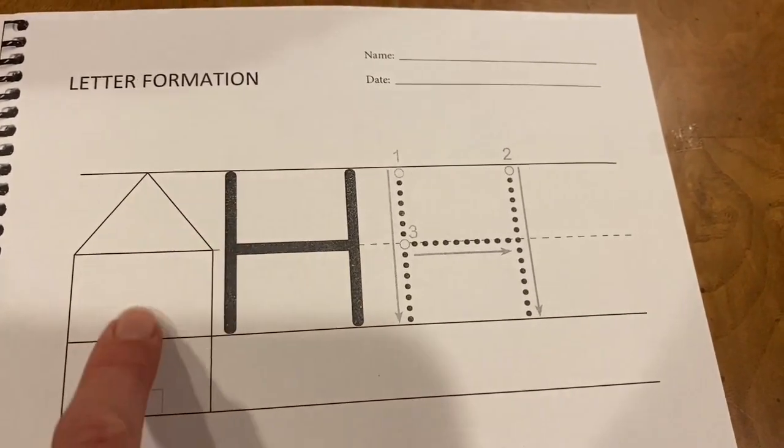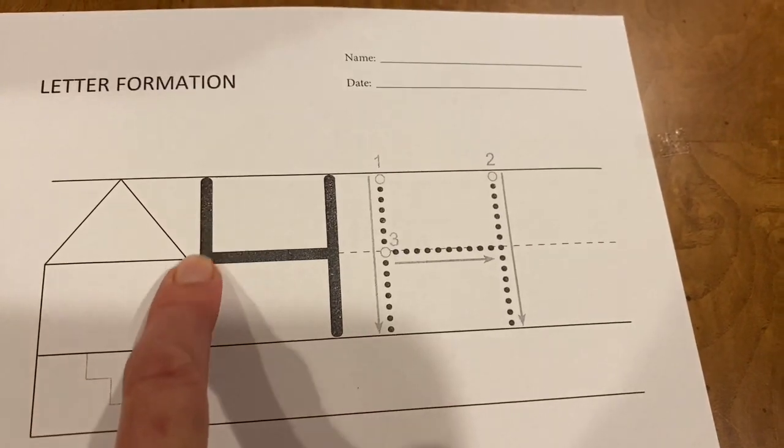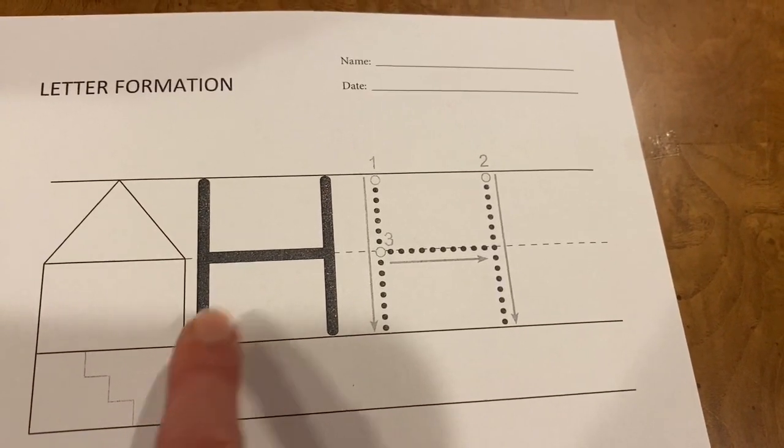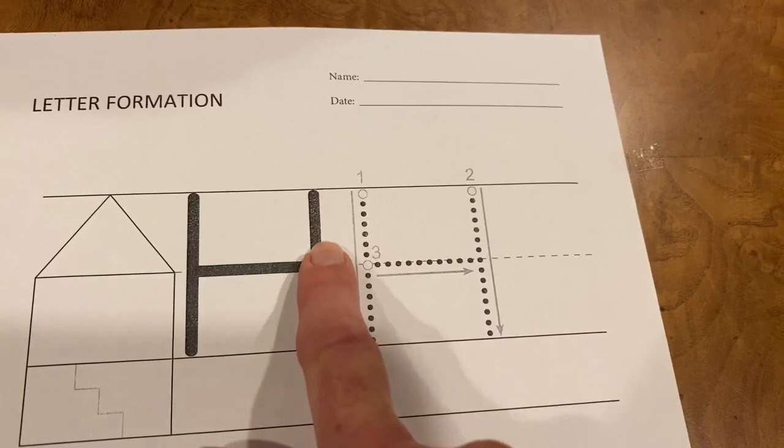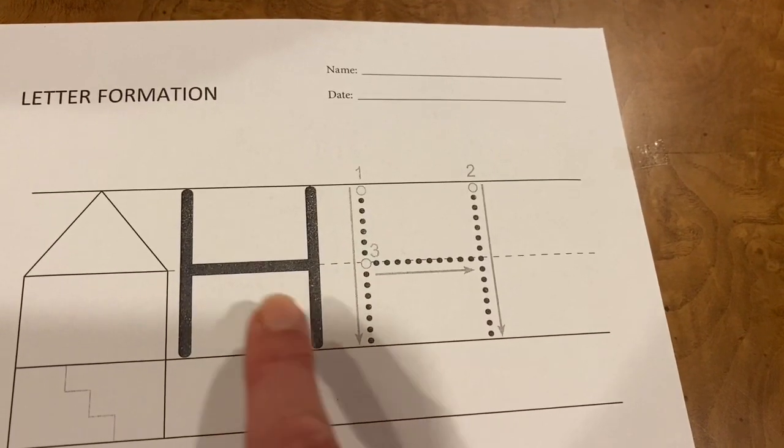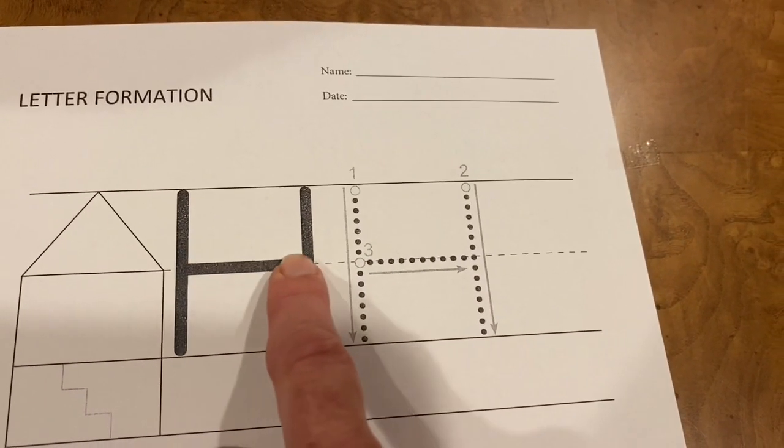Uppercase H starts at the tippy top and comes down. Come across, start at the tippy top and come down. And then on the middle line, we do a line across.